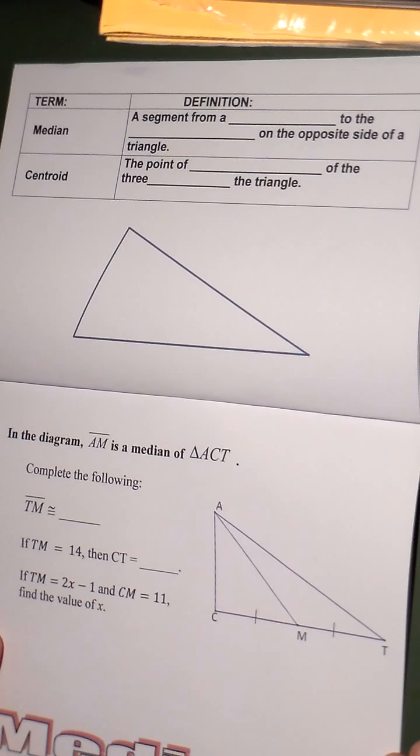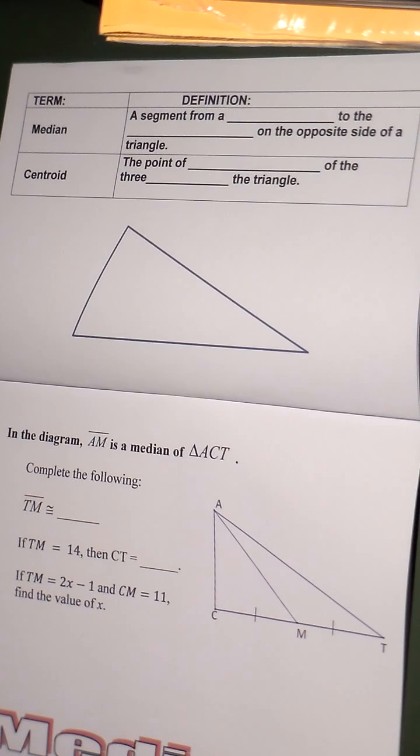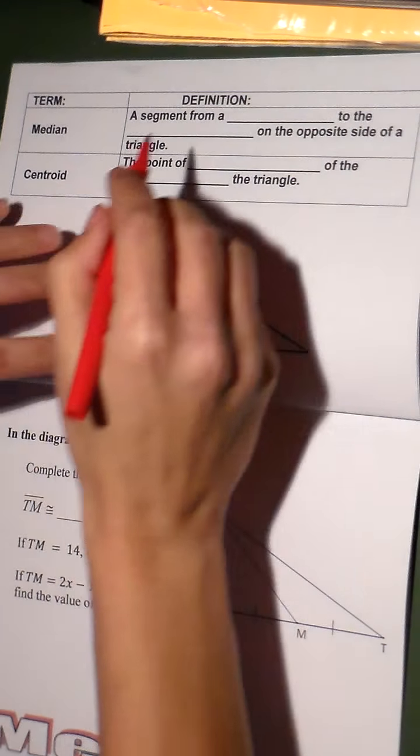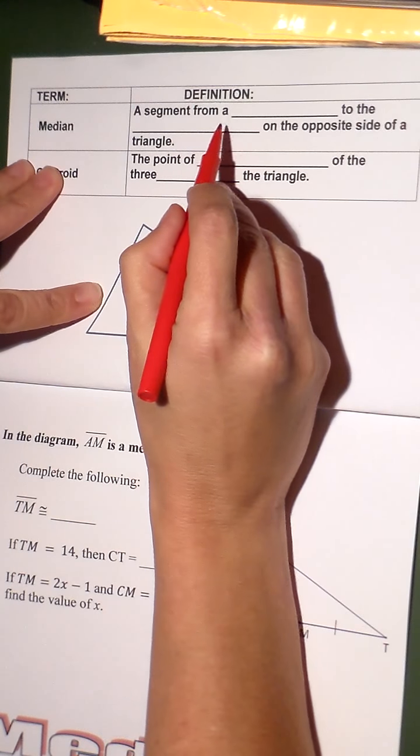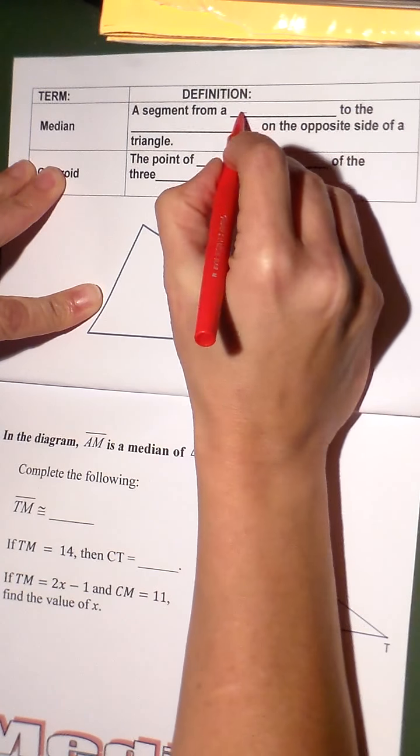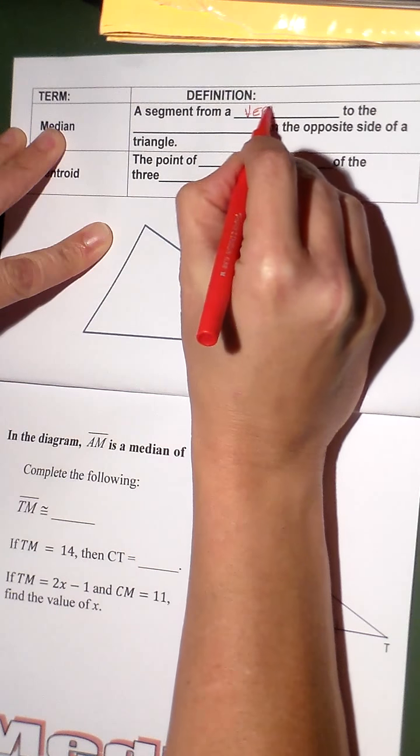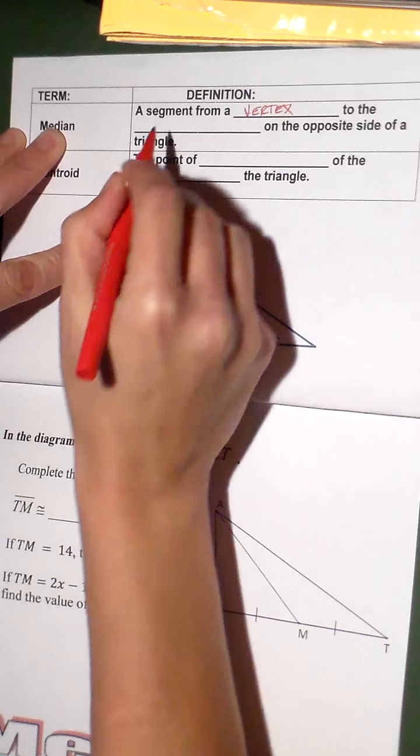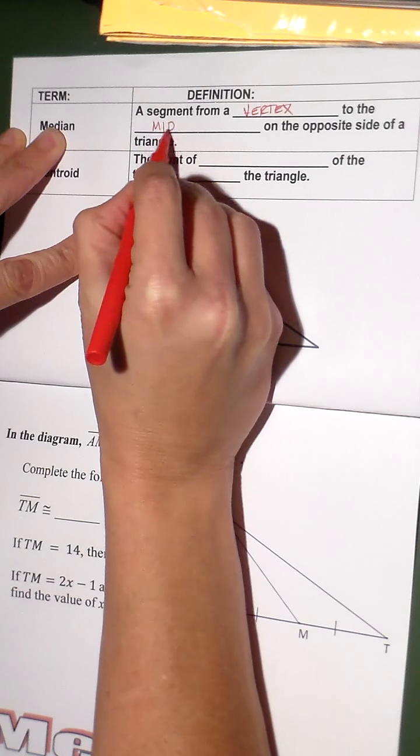All right, this is the median part of the special segments foldable, so let's look at the median. The median is a segment from a vertex to the midpoint of the opposite side.